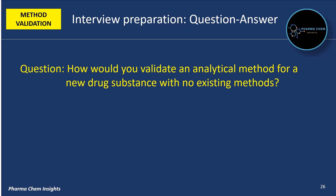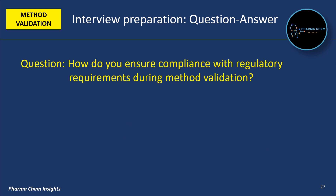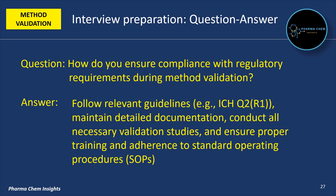Next question: how will you validate an analytical method for a new drug substance with no existing methods? Develop the method based on the chemical and physical properties of the drug, conduct a thorough validation by evaluating all necessary parameters and ensure compliance with regulatory guidelines. Next question: how do you ensure compliance with regulatory requirements during method validation? Follow relevant guidelines such as ICH Q2(R1) for analytical method validation, maintain detailed documentation, conduct all necessary validation studies and ensure proper training and adherence to standard operating procedures (SOPs).